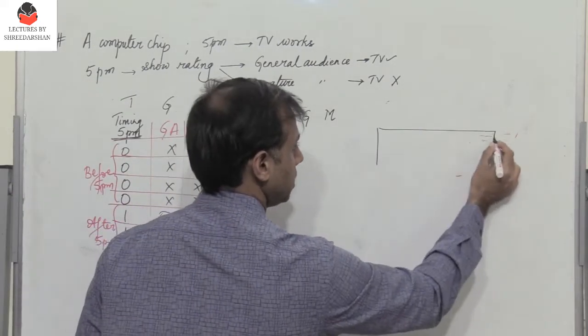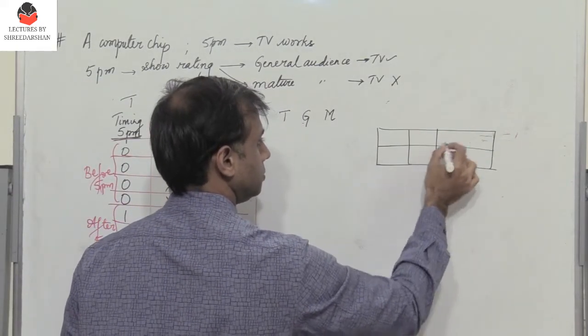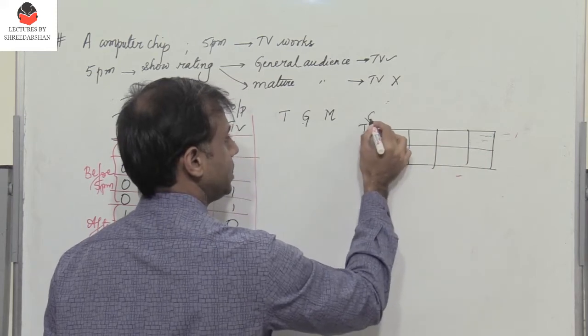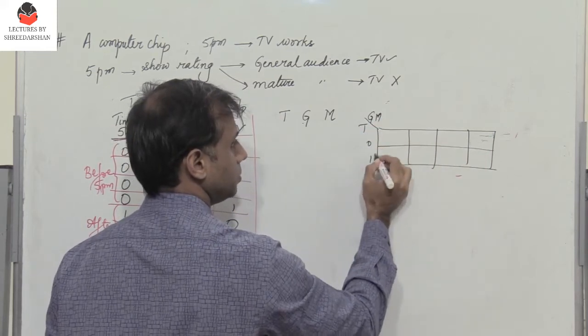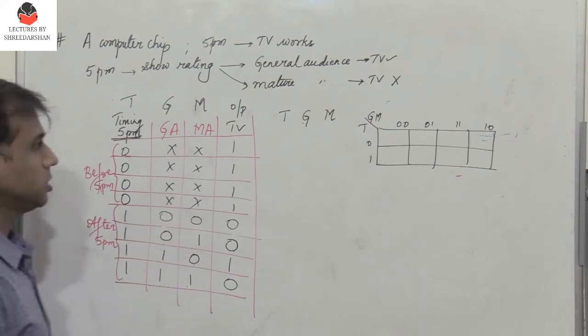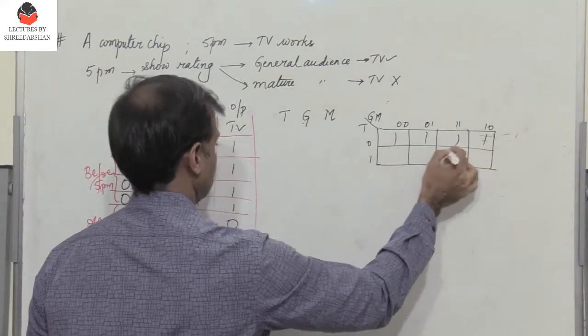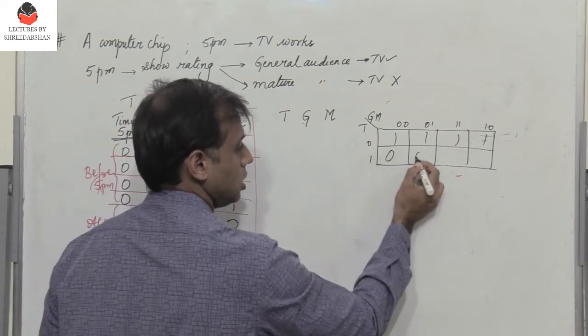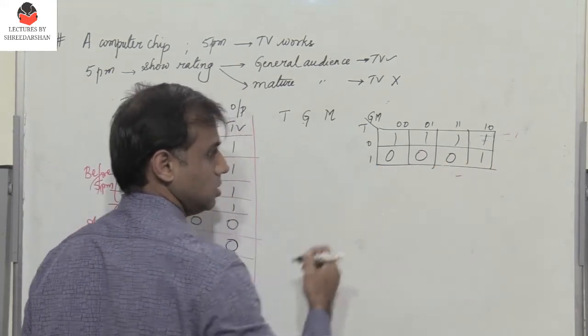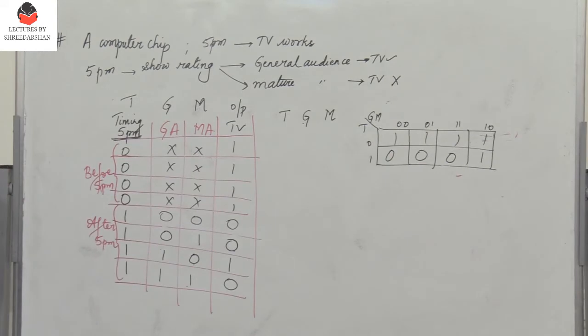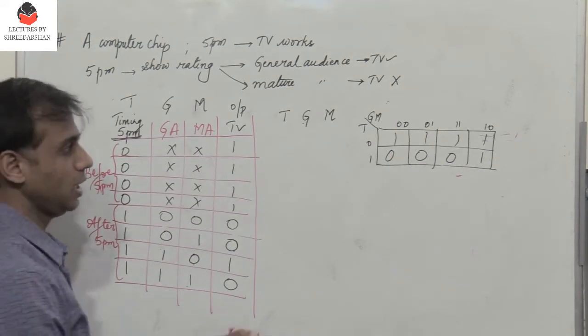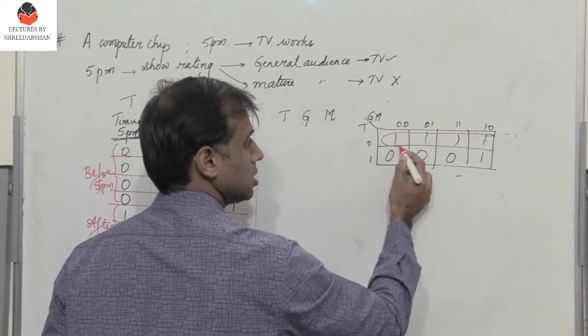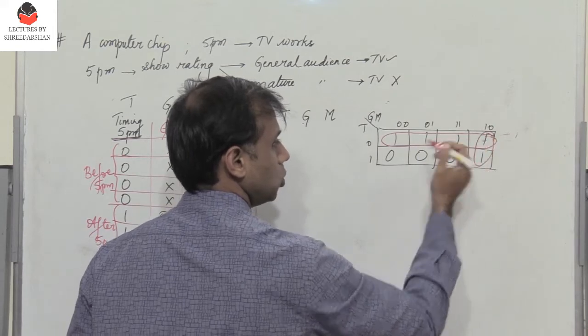This is the output. To get the simplified expression, let me use a three variable K-map with inputs being t, g, and m. Now what are the inputs? It is one here for the first four, and then zero, zero, one, and zero. So zero, zero, one, and zero. Now how can we simplify? We can simplify in such a way that these four ones can be combined and these two ones can be combined.